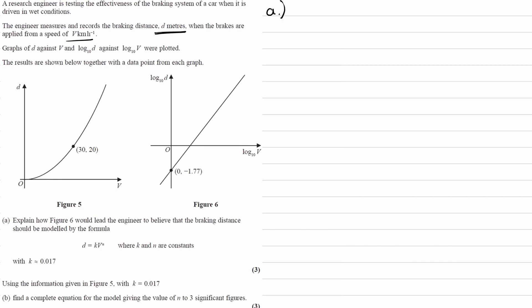So for part a, the hint for this part: we're looking at this graph here. We want to take logs of both sides of the equation that we have and then think about why this graph is appropriate to be modeled by that equation.